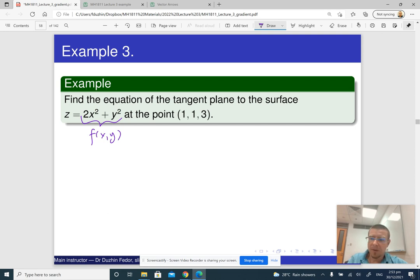So now we should begin with finding the gradient of f. So f_x is, differentiating with respect to x, yields 4x. f_y is 2y. Now let us substitute the gradient points. So x is 1, y is 1.